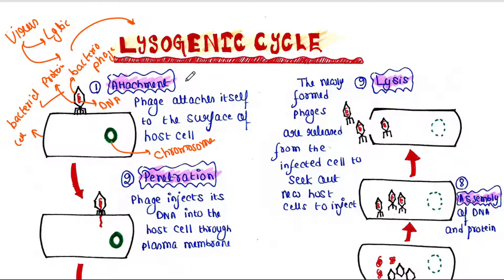The first step is attachment. Here the phage attaches itself to the surface of the host cell — the surface, or you can say, the plasma membrane.